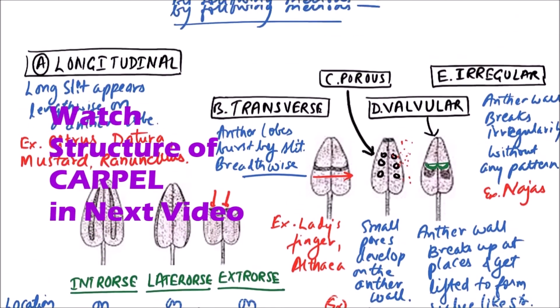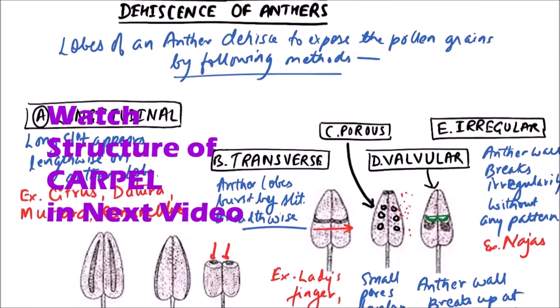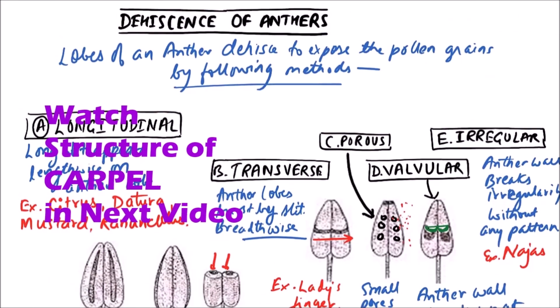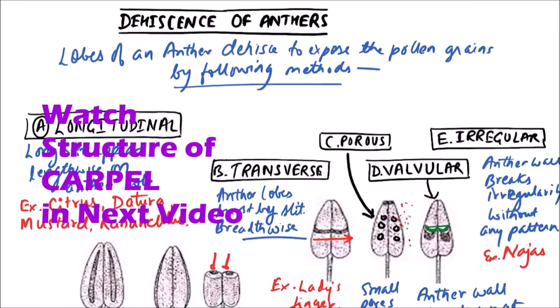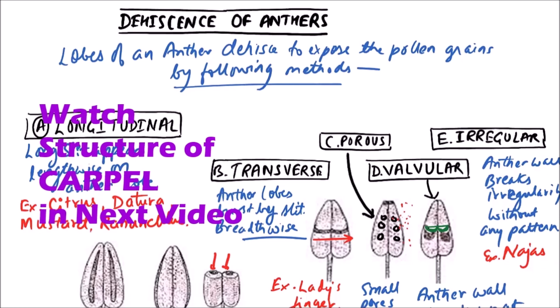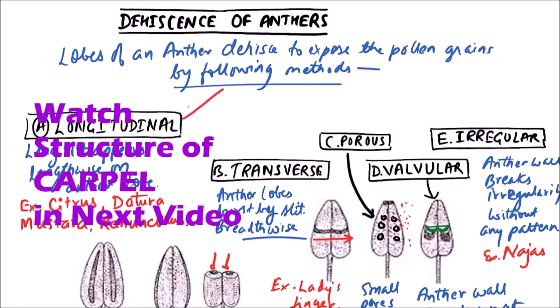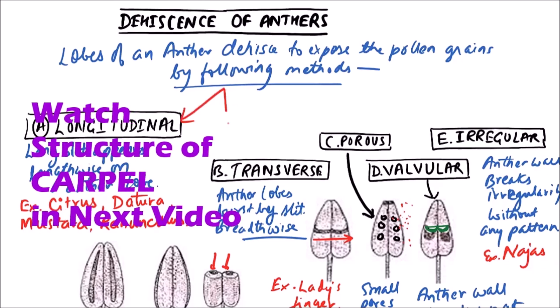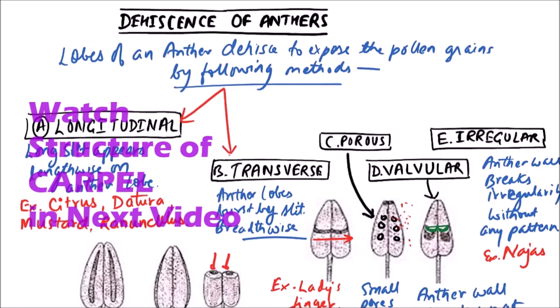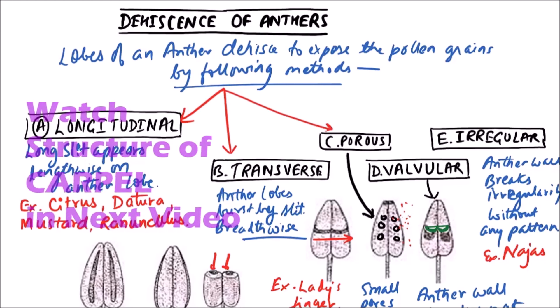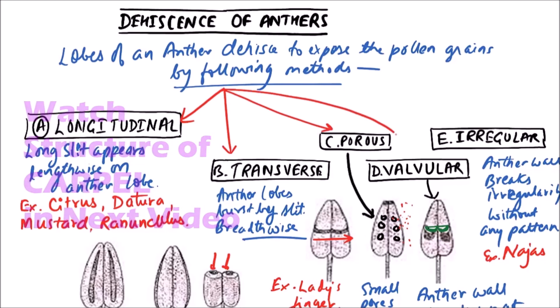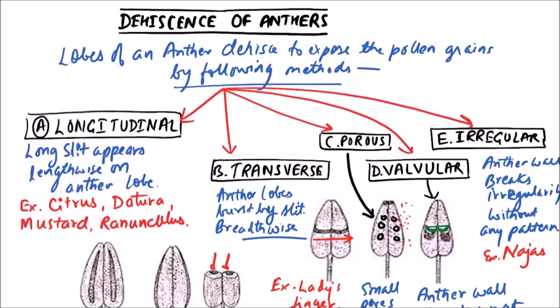So these are the various types of dehiscence of anthers: longitudinal, transverse, porous, valvular, and irregular.